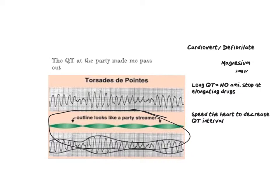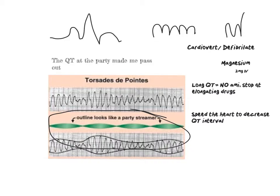So what we've been over so far: we've been over normal sinus rhythm, which has our P, QRS, and then T. Then we went over McDonald's M — that's monomorphic VTAC. And then polymorphic VTAC, which is torsades. So those are the three rhythms we've gone over so far.